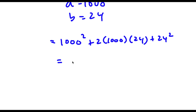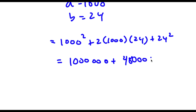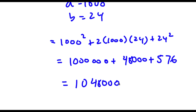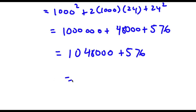Now, 1000 squared is simply equal to 1,000,000. Plus, I have 2 times 1000, which is equal to 2000, and 24 times 2000, which is equal to 48,000. So I have plus 48,000, plus 24 times 24, which is equal to 576. Now, if I add all of these: 1,000,000 plus 48,000 is simply going to equal 1,048,000, plus 576. And 1,048,000 plus 576 is simply equal to 1,048,576.